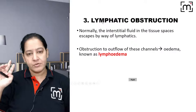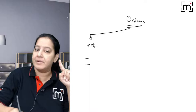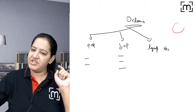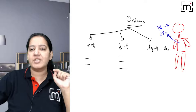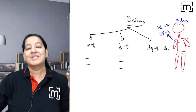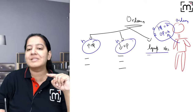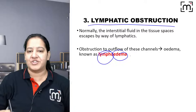The third cause is lymphatic obstruction — edema due to this is called lymphedema. Imagine a patient with normal hydrostatic pressure, normal oncotic pressure, yet still having edema. The backup — the lymphatics — are obstructed. Normally, lymphatics collect the small amount of residual fluid and return it to the blood via the thoracic duct. If lymphatics are obstructed, this backup fails and edema results.